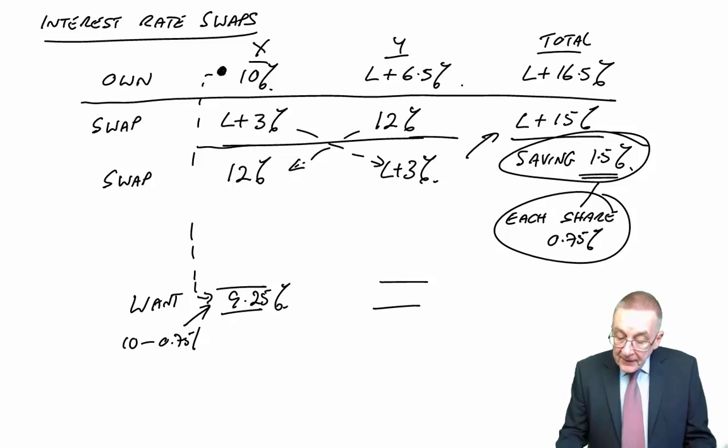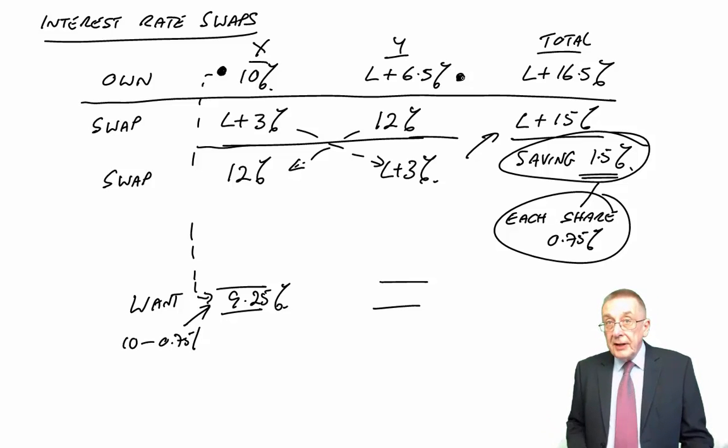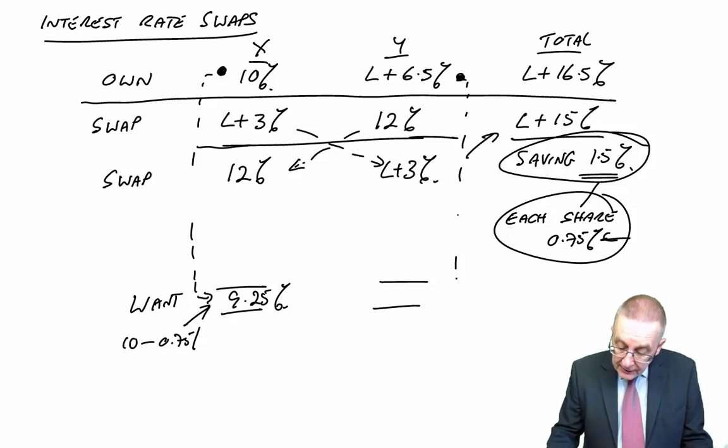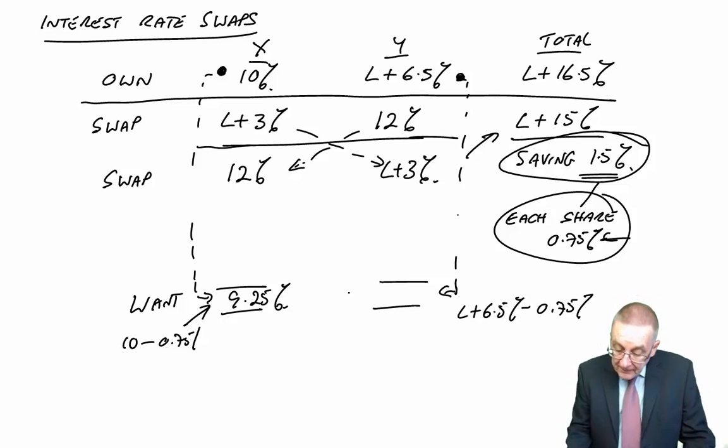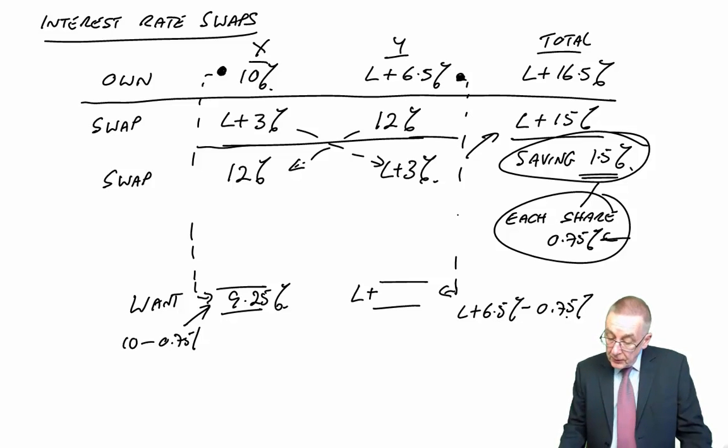What about Y? If Y did its own borrowing, it would be LIBOR plus 6.5. And they want to borrow floating, remember. But, we're saying they can save 0.75. And so, the end result that we want is that they pay LIBOR plus 6.5 less the saving of 0.75. Which comes to what? LIBOR plus 6.5 minus 0.75 is 5.75. That's what we want to end up with.